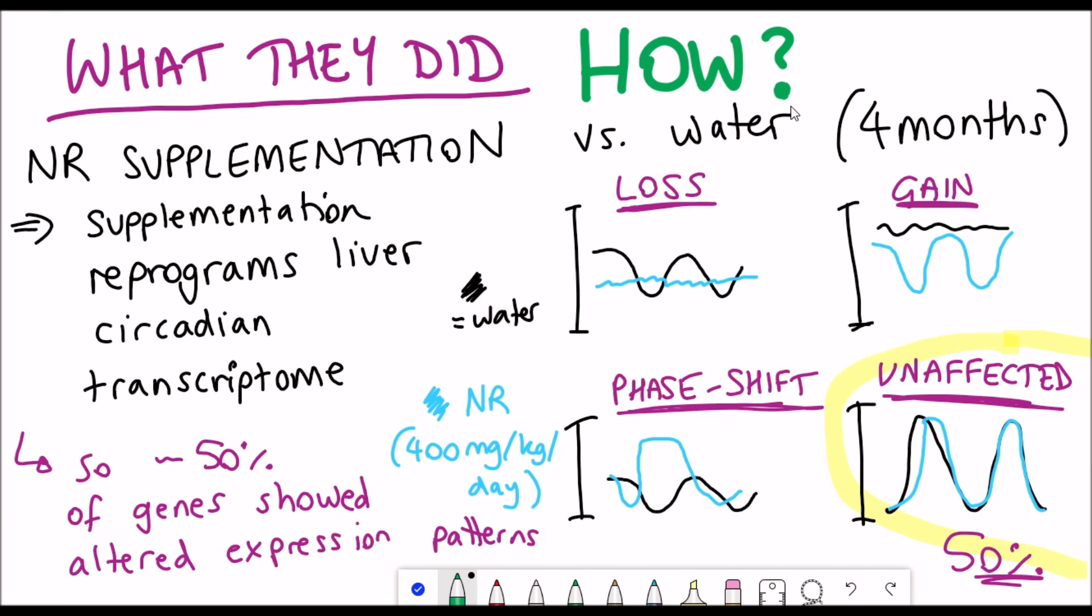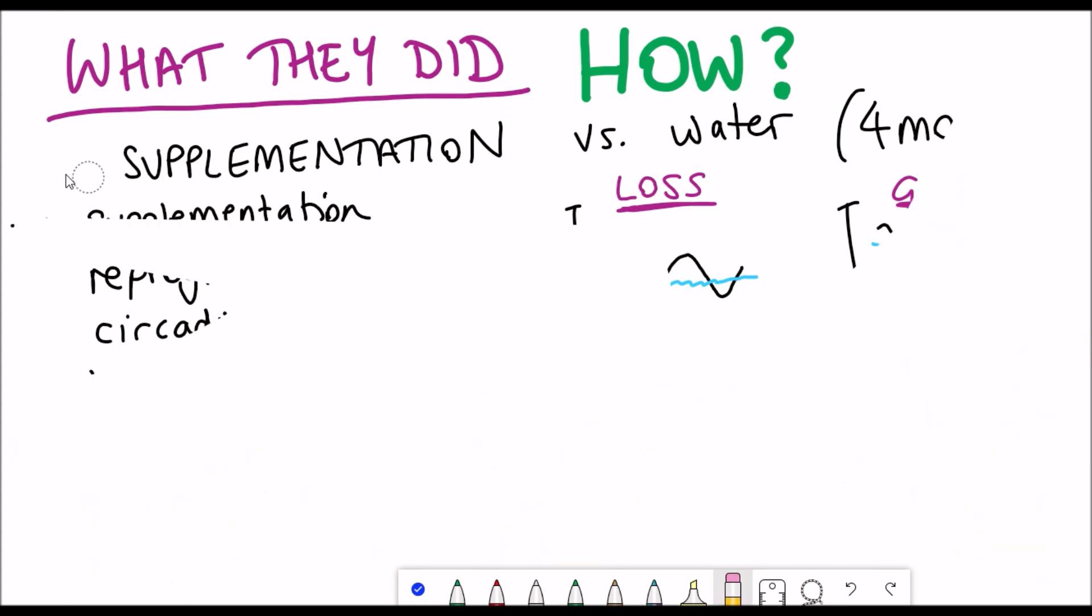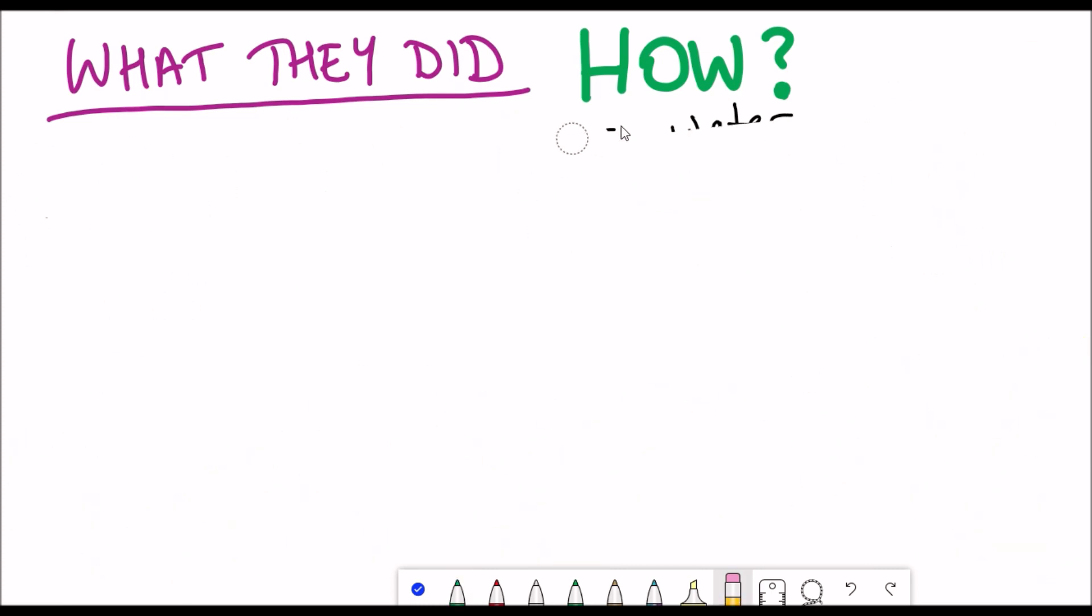Around 50% were unaffected. So around 50% of genes, which is a lot of genes, showed an altered expression pattern by supplementation. So the question is, how? How is this happening? What is NAD+ doing?